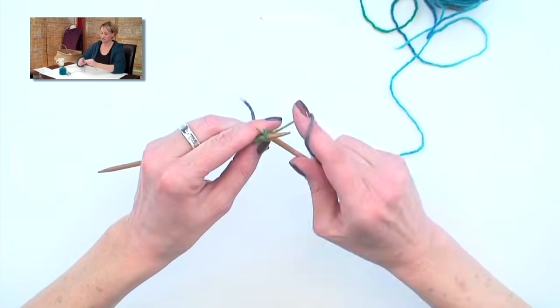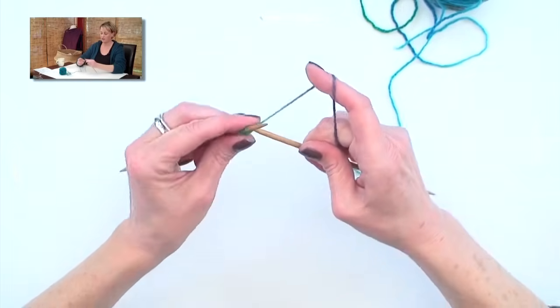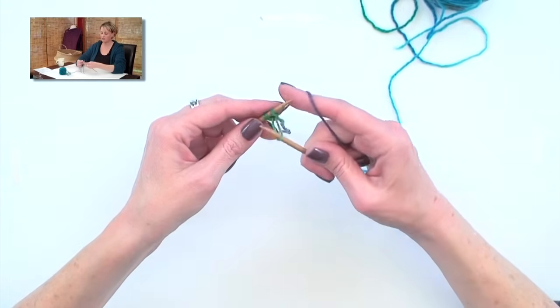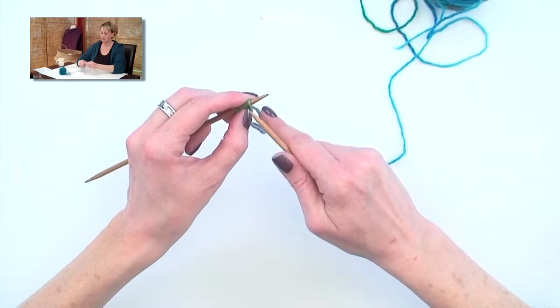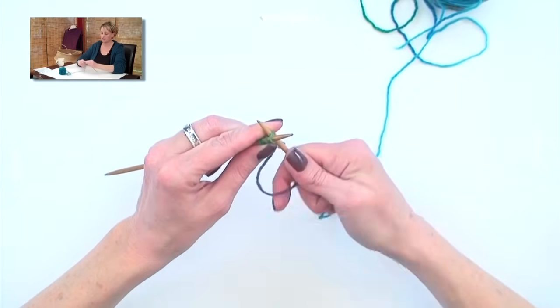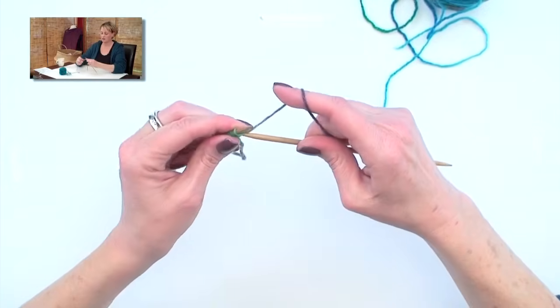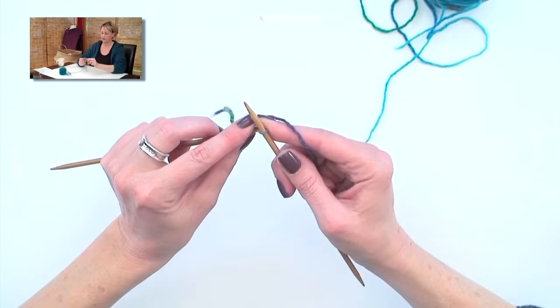Between the two stitches, wrap it and pull it through. And here's a hint: pull it through pretty big, put it on the left needle, and then tighten it up. You put it through the last two stitches and up on the left needle.